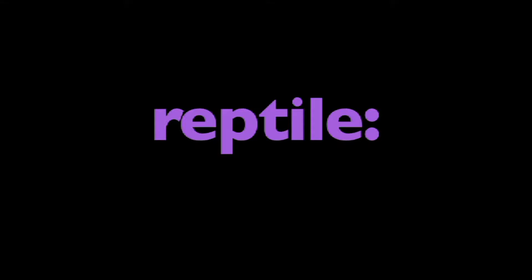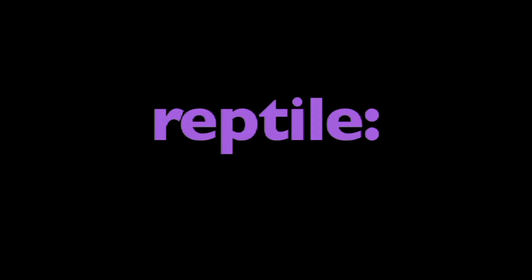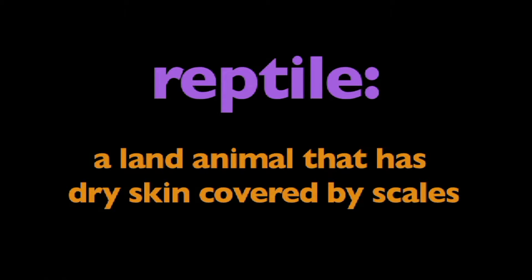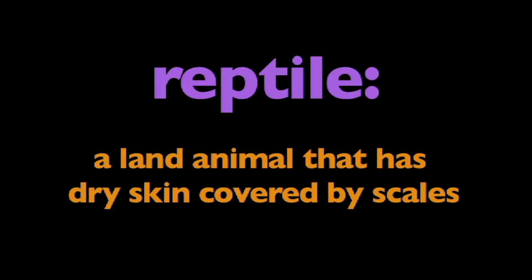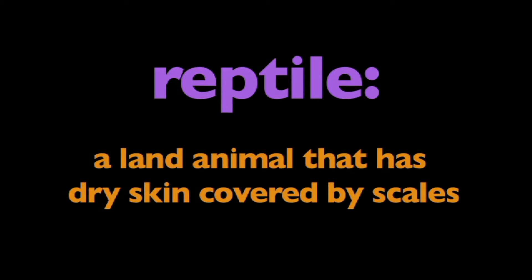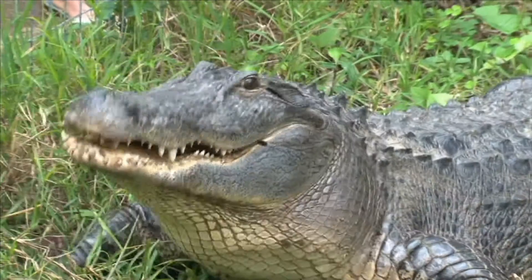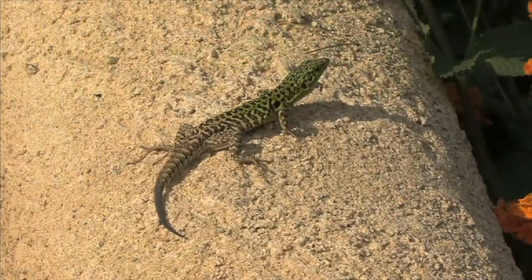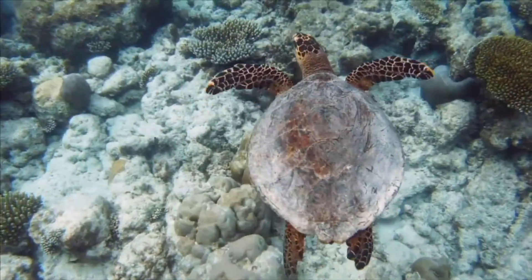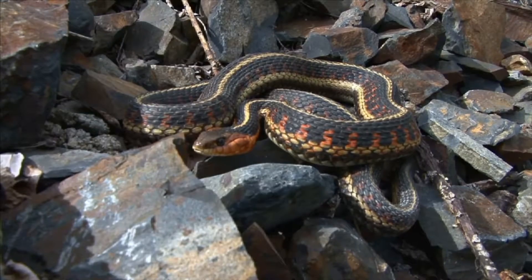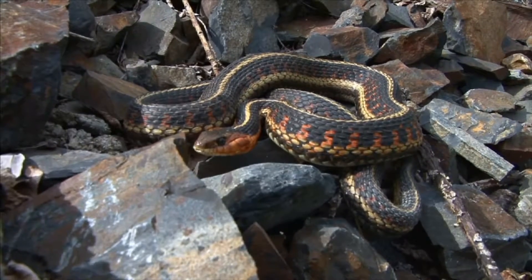In this program, we're going to learn about reptiles. What is a reptile? A reptile is a land animal that has dry skin covered by scales. Alligators, lizards, turtles, and snakes are all different kinds of reptiles.